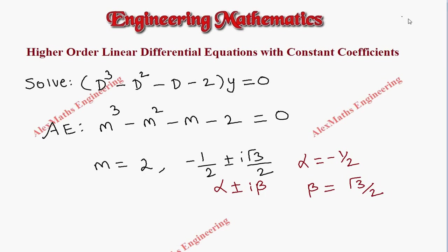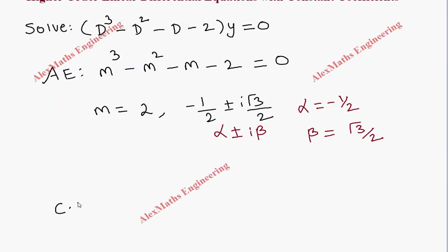We now write the complementary function. As per the procedure, first for m = 2, we have c₁e^(2x), plus e^(αx) where α = -1/2.